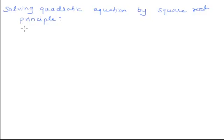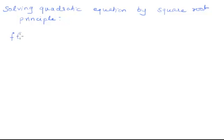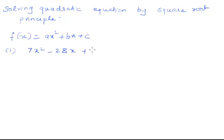There are different methods for solving quadratic equations. The first one, which we have seen, is by factorization. The second method is by solving it using the square root principle. Suppose you have a general equation for the quadratic function given as f(x) = ax² + bx + c. If you have a quadratic equation of the form 7x² - 28x + 3 = 0, I am going to solve it using the square root principle.